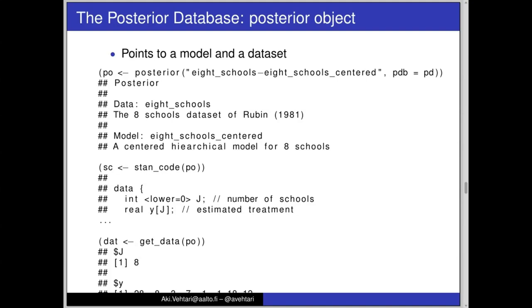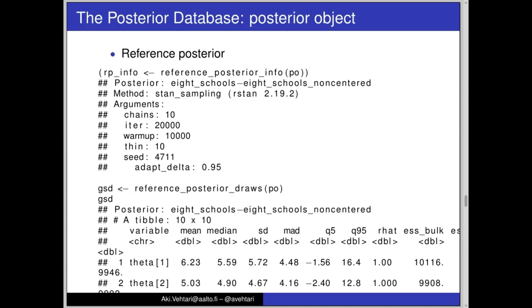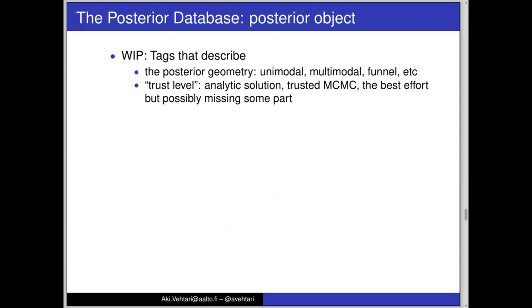Here's a quick illustration. We have this posterior object with easy access. First we connect to this database and then we can get some basic information like eight schools from Rubin 1981, centered parameterized model. We can get Stan code for that, we can get data, and we can get the reference posterior with information about how this was generated. We use the posterior package to show data for the draws and then we can do comparison. I'll come back to a bit of this reference posterior.